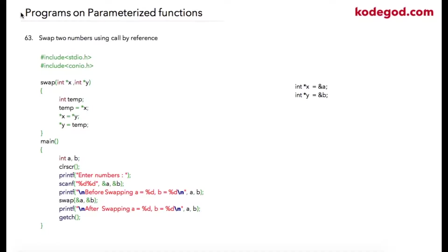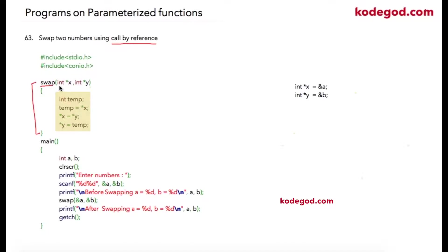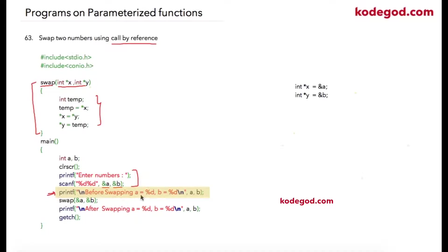We are continuing our studies on parameterized functions with one more program — swapping two numbers using call by reference. We are going to use pointers. The function is called swap and it takes two integer pointer parameters x and y. Starting from main, I am asking the user to enter two numbers a and b. The values entered will be stored at the address location of a and address location of b. I then print 'before swapping: a equals value of a and b equals value of b', and then call the swap function. Notice that instead of passing a and b directly, I am passing the address of a and the address of b.